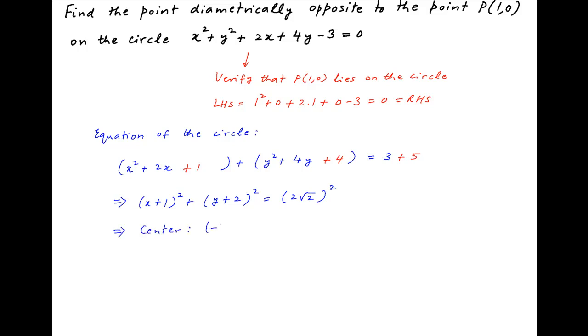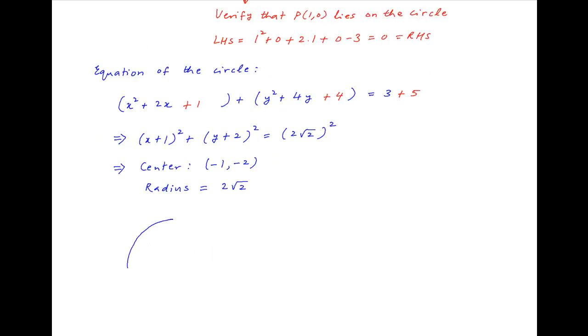This represents the equation of a circle with center at (-1,-2) and the radius equal to 2√2. Now we draw out this circle. The center of the circle is at the point (-1,-2). Let's denote this by O.